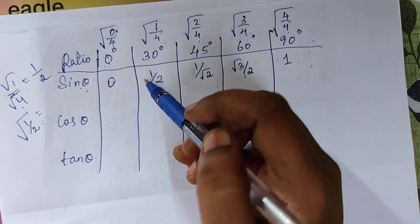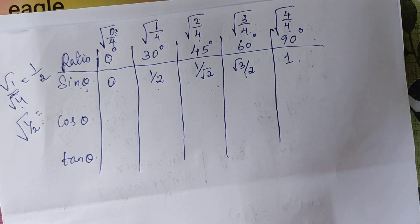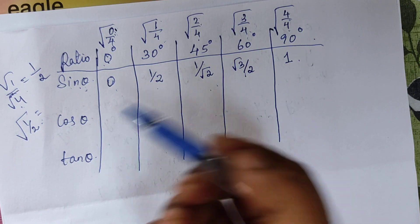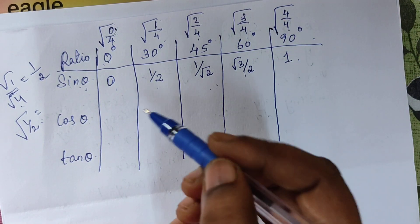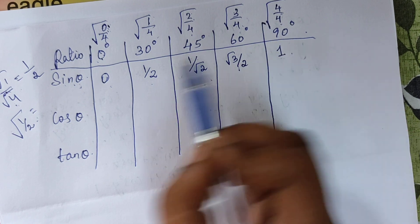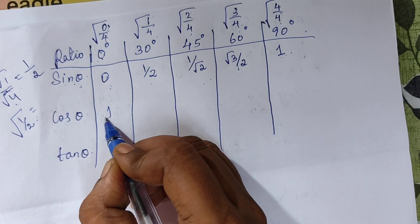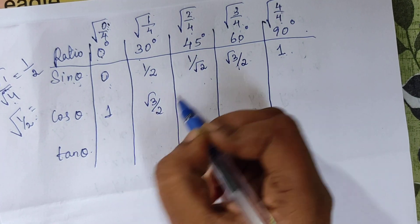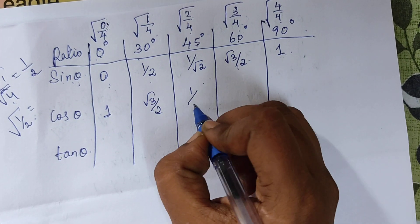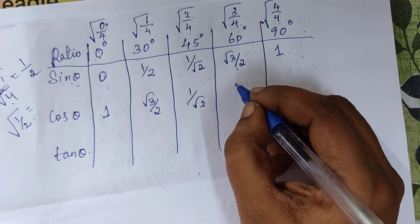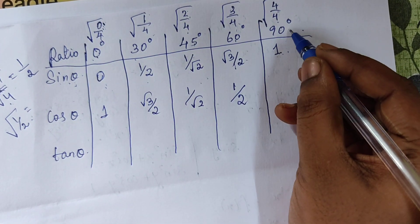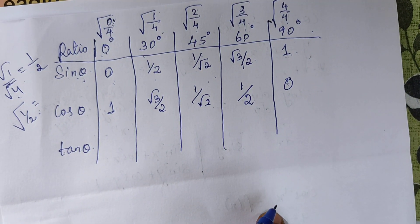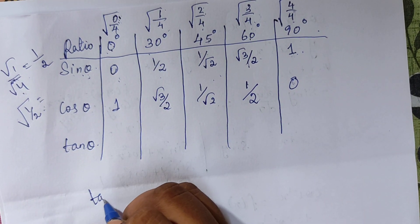For the cosine ratio, we simply write the sine values in reverse order. So cos 0°=1, cos 30°=√3/2, cos 45°=1/√2, cos 60°=1/2, and cos 90°=0.